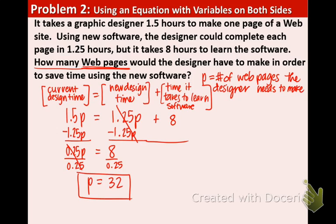So what does this answer mean? This means that if the designer was to make 32 web pages, he or she would spend the same amount of time using the new software and also the old software. But the question said, how many web pages would the designer have to make in order to save time? 32 pages. This person would not be saving time. They would be using the exact same amount of time using either software. So what we need to do is make more than 32. So the next amount of pages would be 33. So what we're going to say is the designer must make 33 pages or more in order to save time using the new software. And we're done.